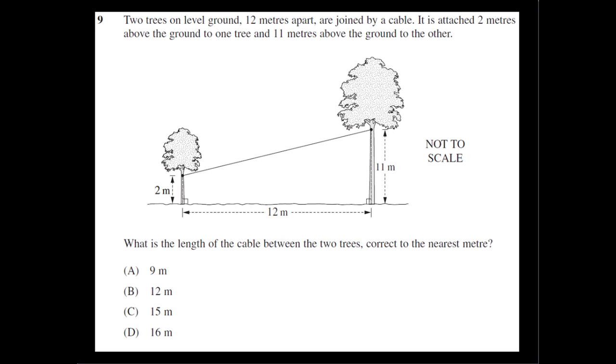Okay, question nine presents us with a diagram of two trees. We're told that they're on level ground and that they are 12 meters apart. So there's a shorter tree, which is just over two meters, and there's a bigger tree, which is just more than 11 meters.